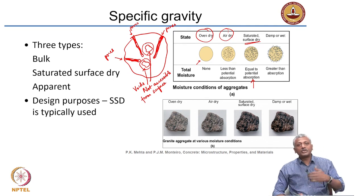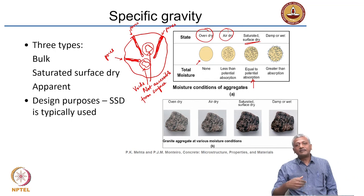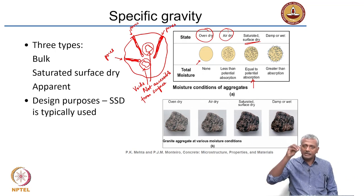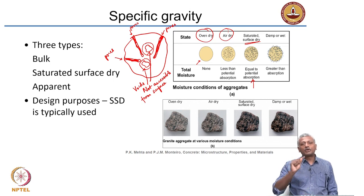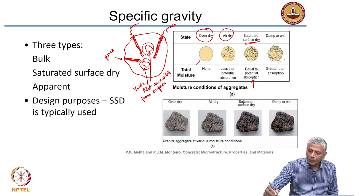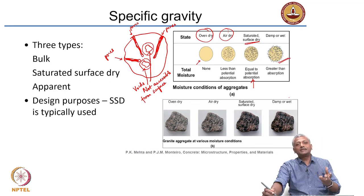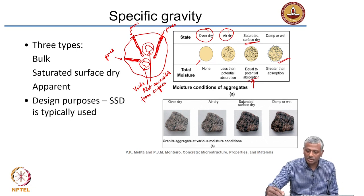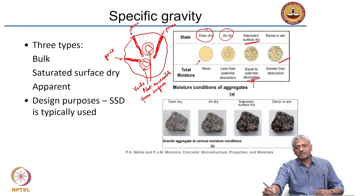When you have aggregates lying outside in the job site, subjected to rain, you have moisture which is completely saturating the aggregate and also leaving behind a film of water on the surface. That is called wet aggregate, where the moisture content is greater than the amount that can be absorbed by the aggregate — more moist than the absorption level.